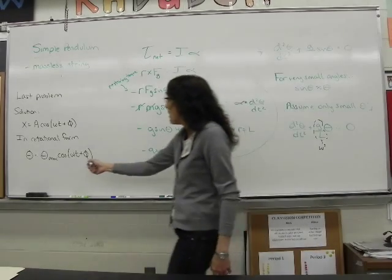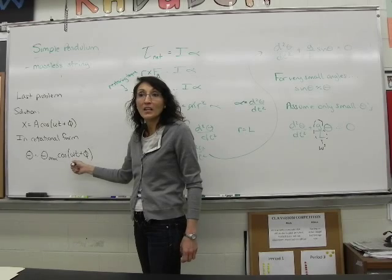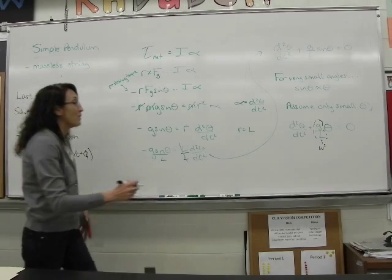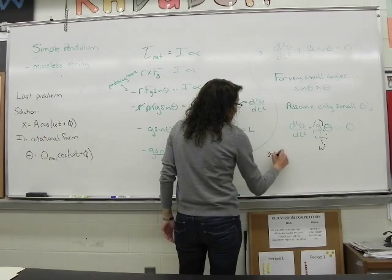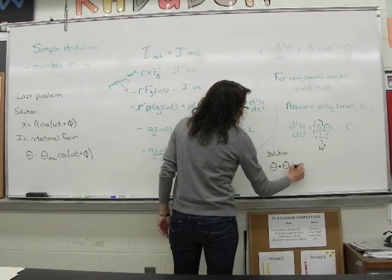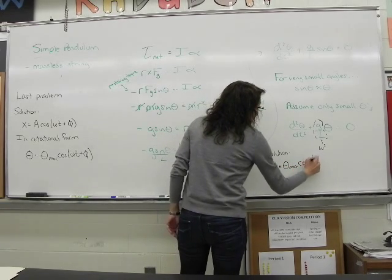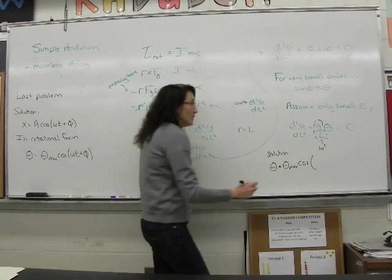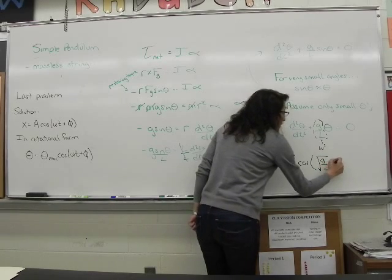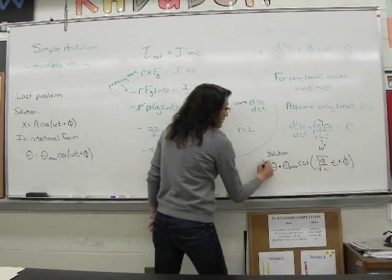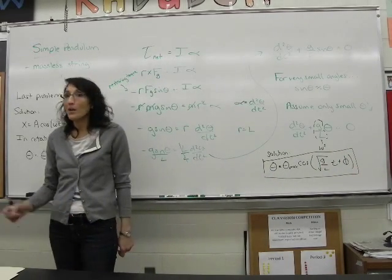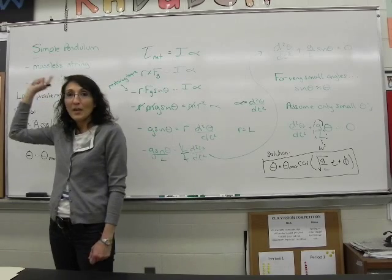What you have to do every time is figure out what to plug in here. So for this problem, for our simple pendulum, the solution will be theta equals theta-max cosine. What do we plug in now for omega? Square root of g over L, times t plus phi. And this is the solution for just the simple pendulum.